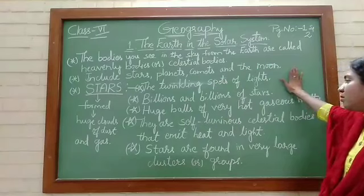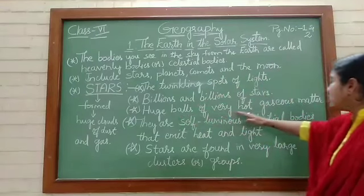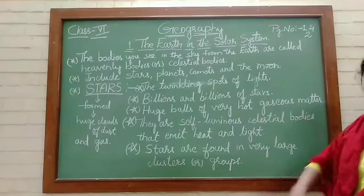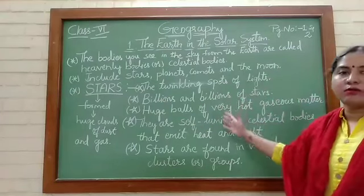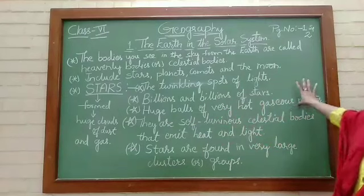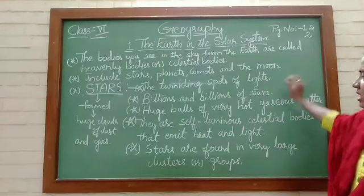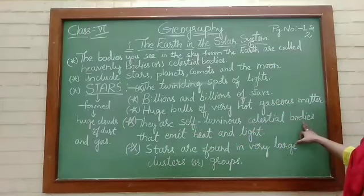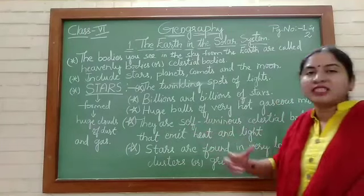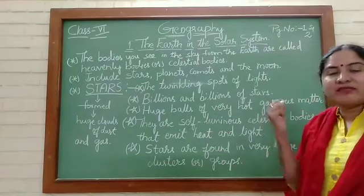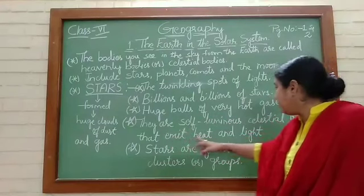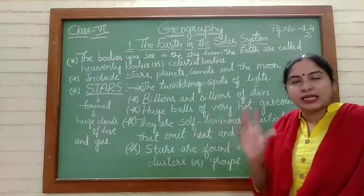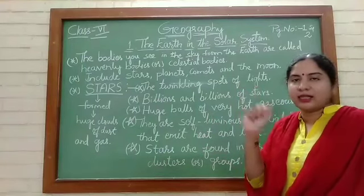How are stars formed? They are huge balls of very hot gaseous matter. They are self-luminous celestial bodies. Self-luminous means they emit light and heat. That is why they twinkle in the sky.